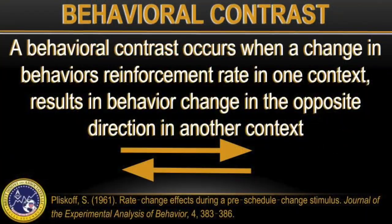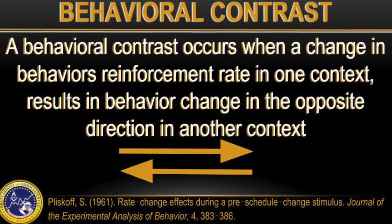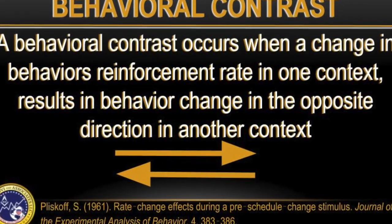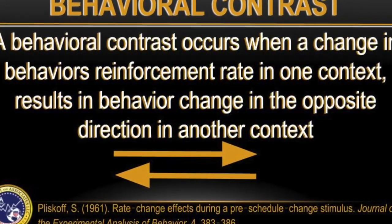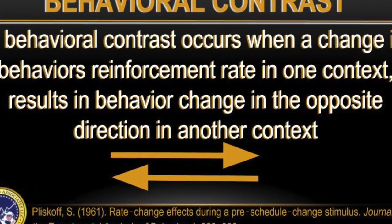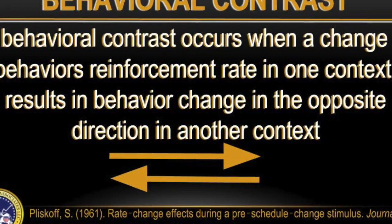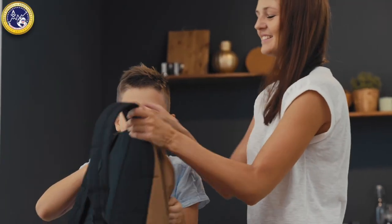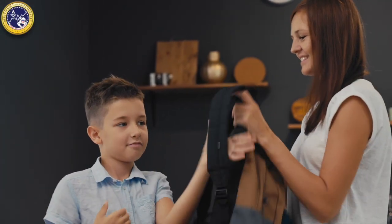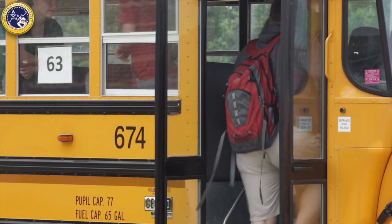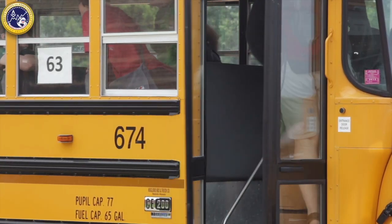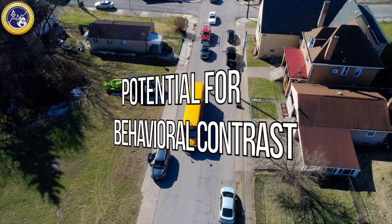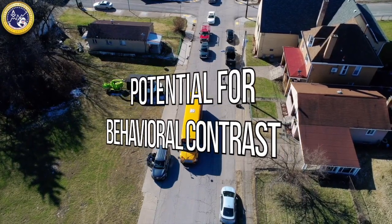Similarly, Pliskoff and colleagues explained that a behavioral contrast occurs when a change in a behavior's reinforcement rate in one context results in behavior change in the opposite direction in another context. Because multiple schedules are always at play, in order to truly plan and train for generalization, we must consider the potential for behavioral contrast.